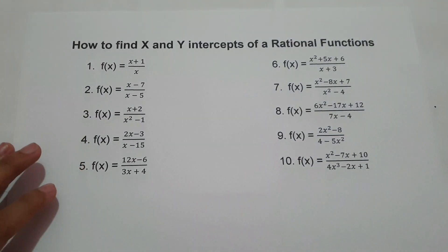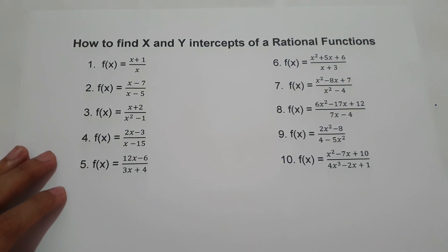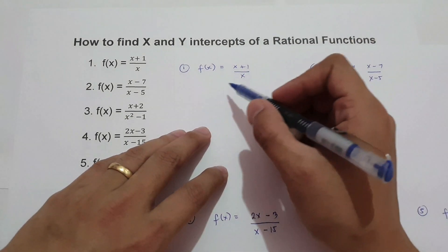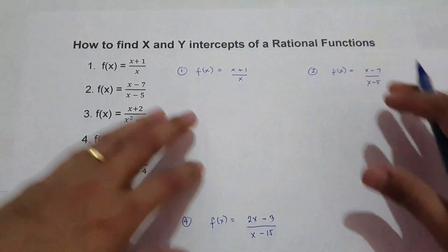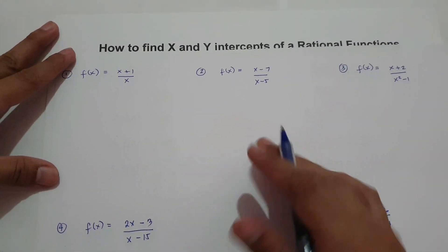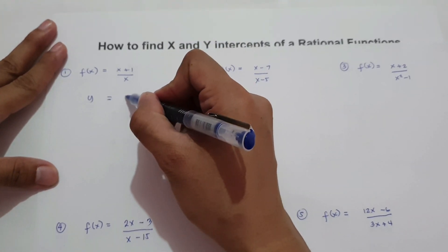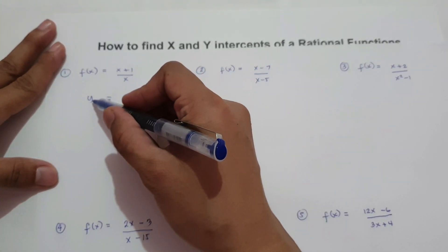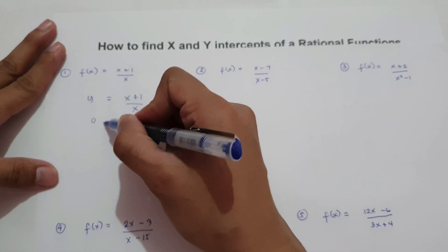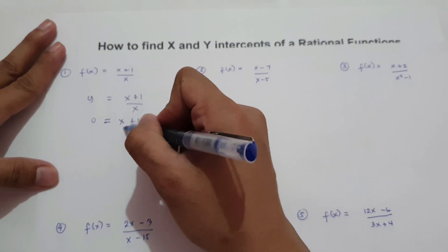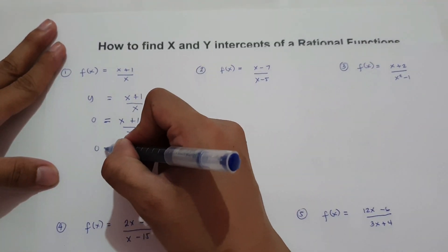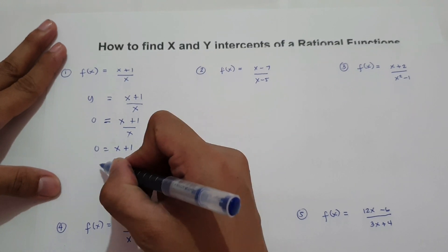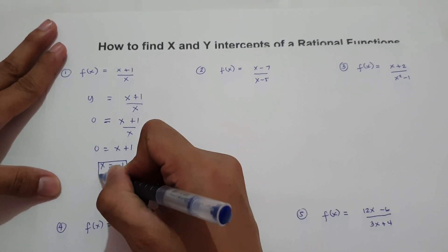Let's take the first example. On example number 1, we have f(x) equals (x + 1) over x. Let us change f(x) in terms of y, so that is y = (x + 1) / x. To find x intercept, change y into 0: 0 = (x + 1) / x. Cross multiply: 0 = x + 1. Then move 1 to the side of 0, so x equals negative 1. So our x intercept is negative 1.